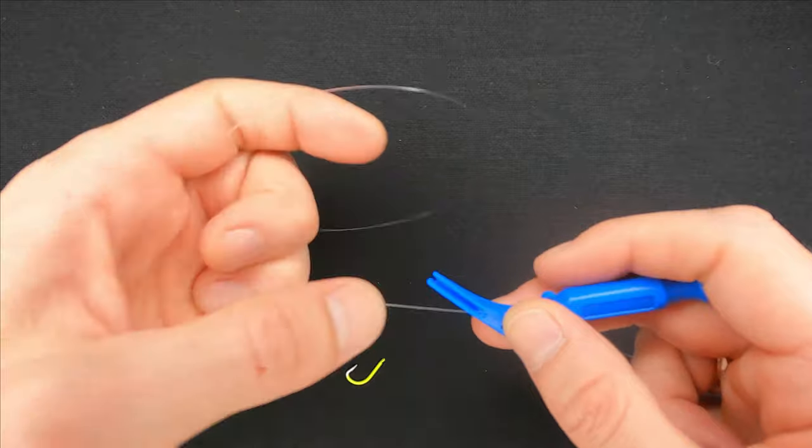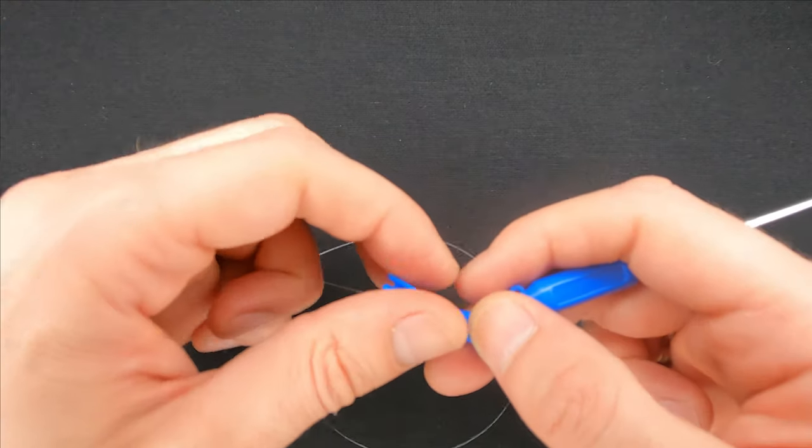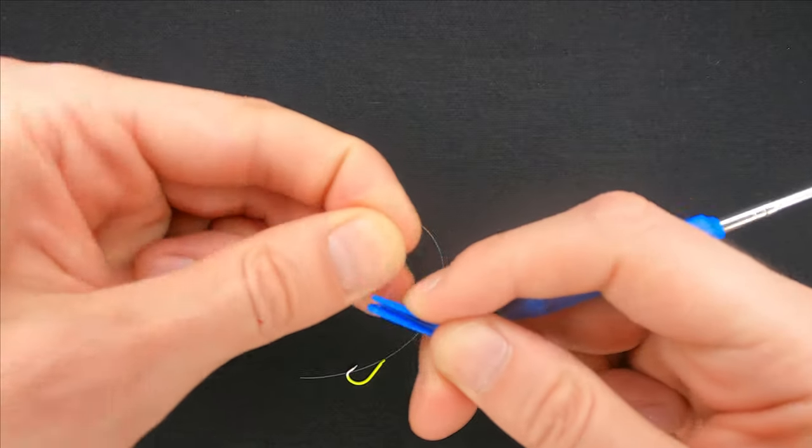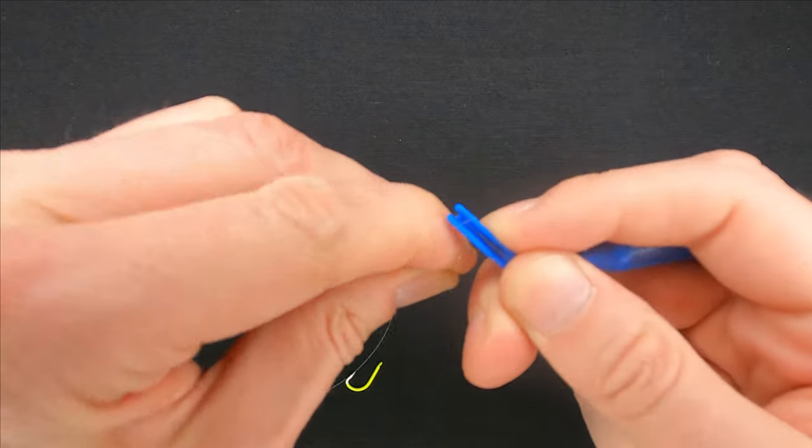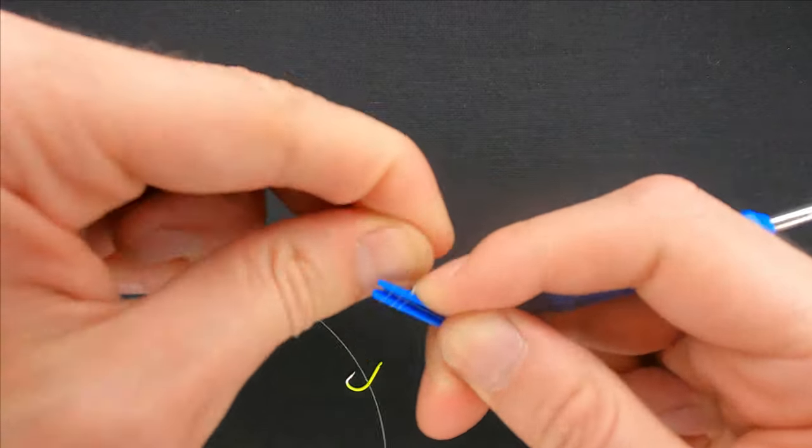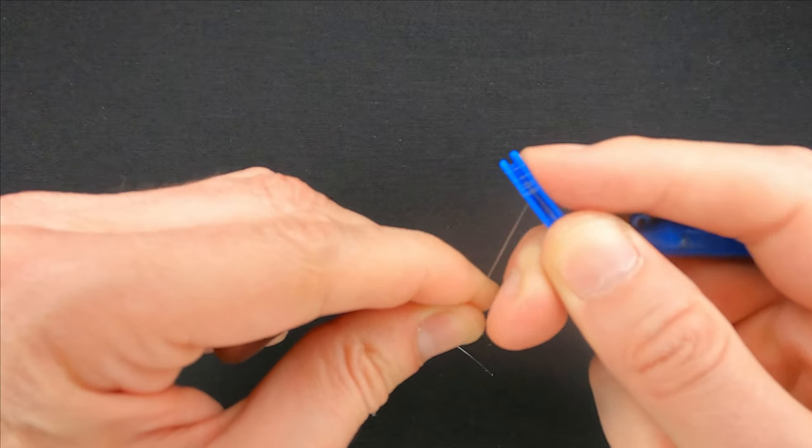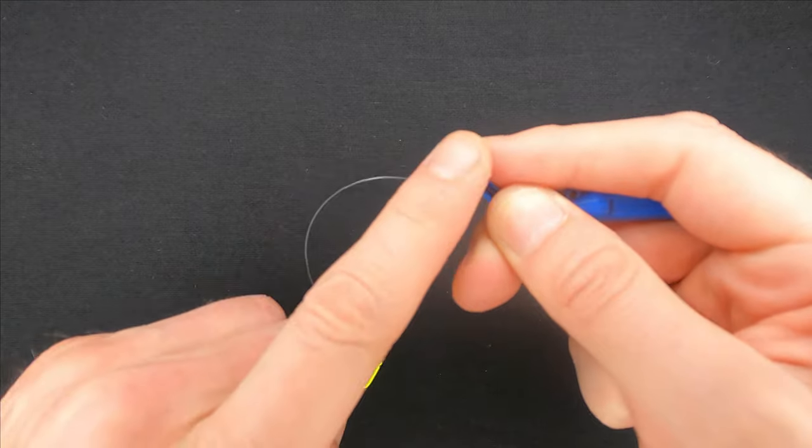To tie hooks, you just take the line and wrap it around the knot tool about five to seven times. After you've done it, hold the wraps with your index finger.